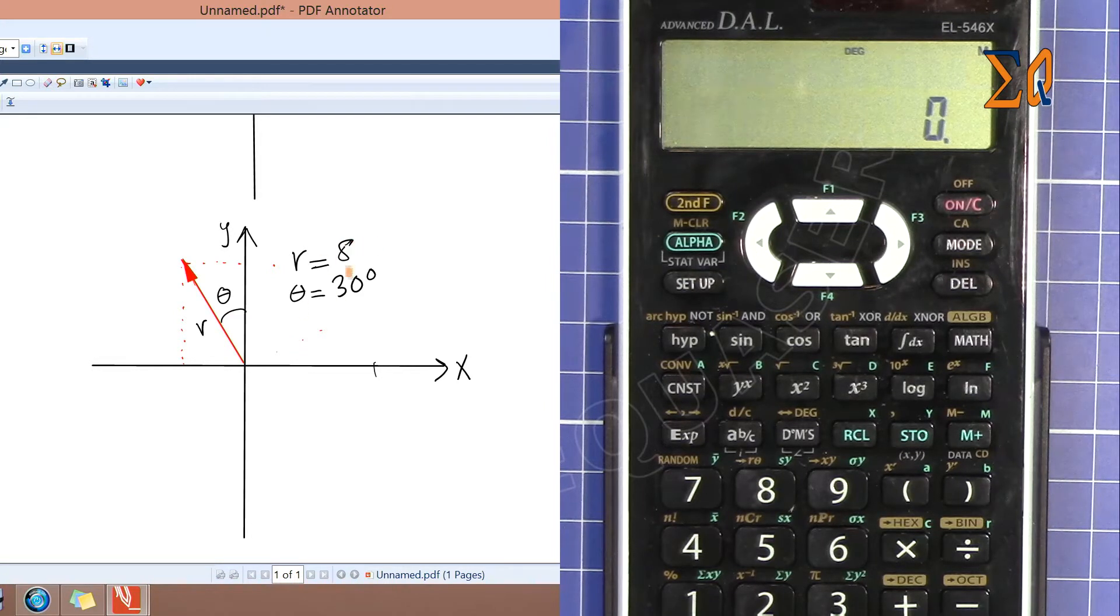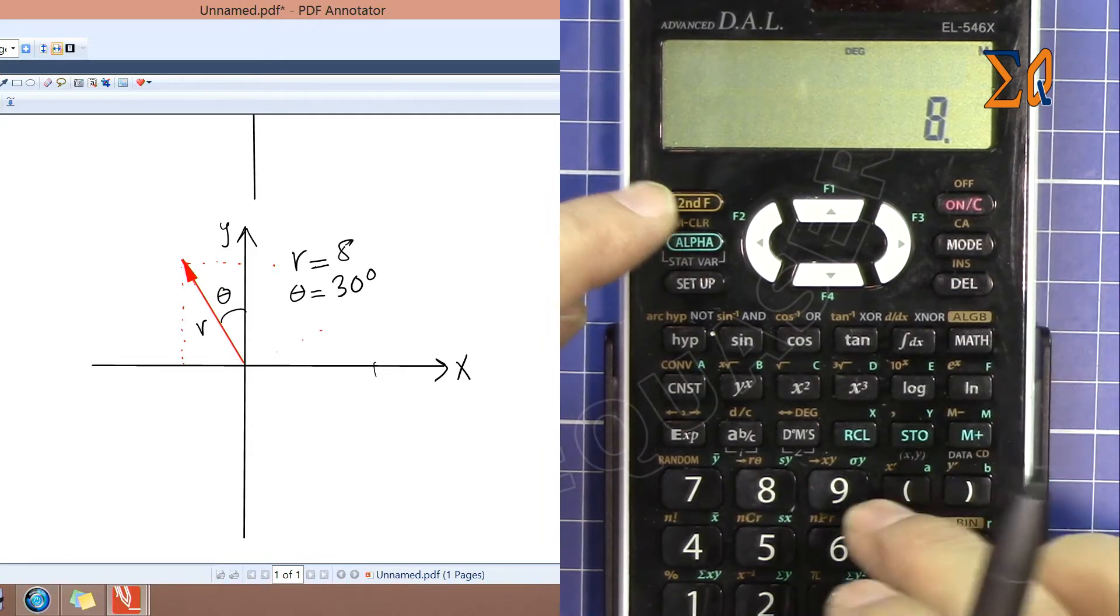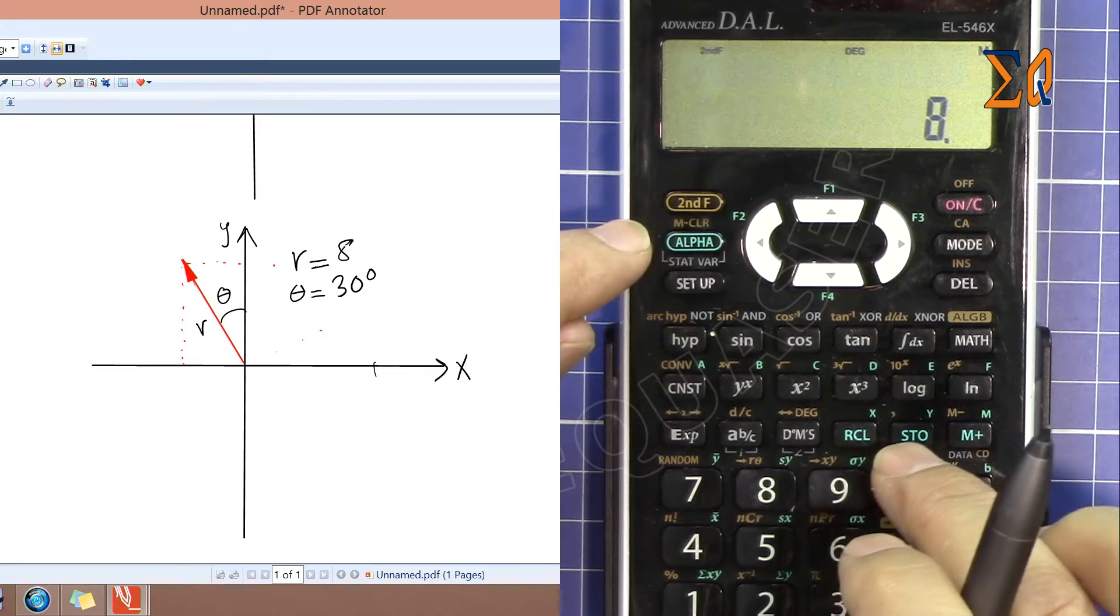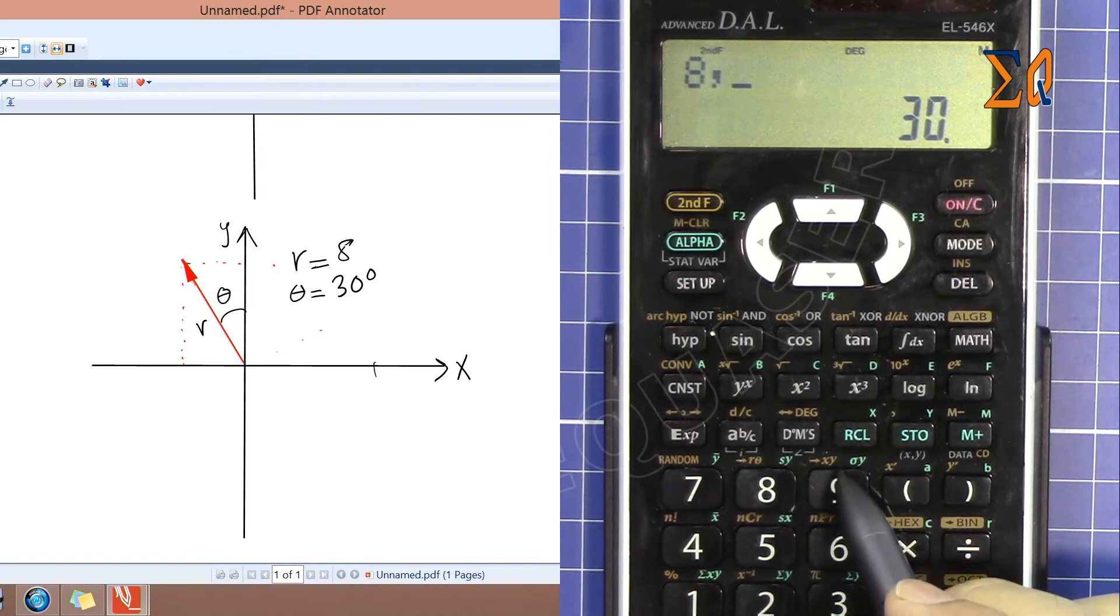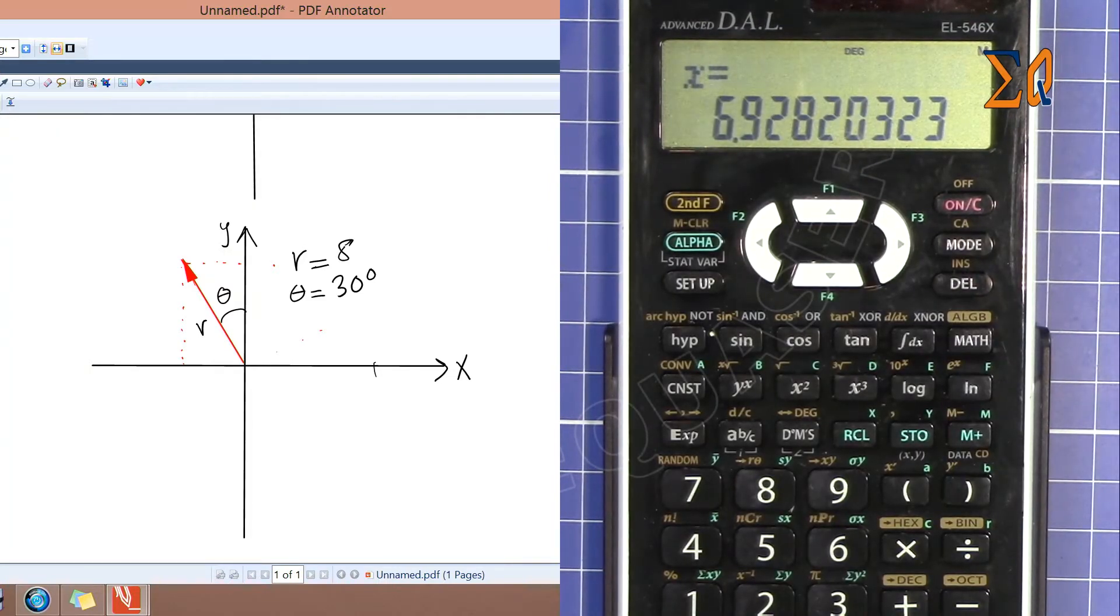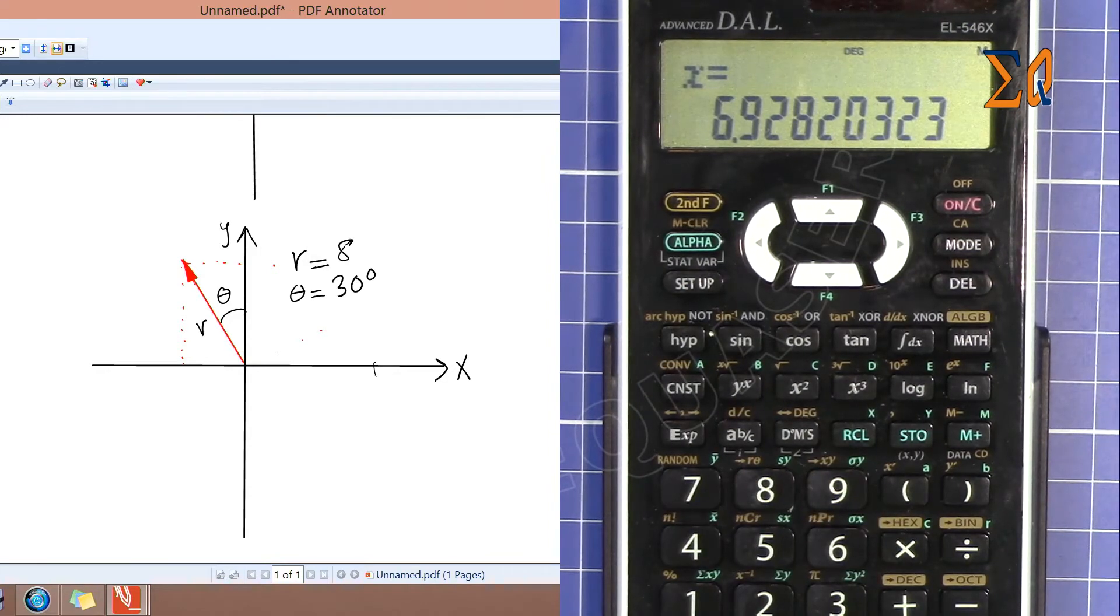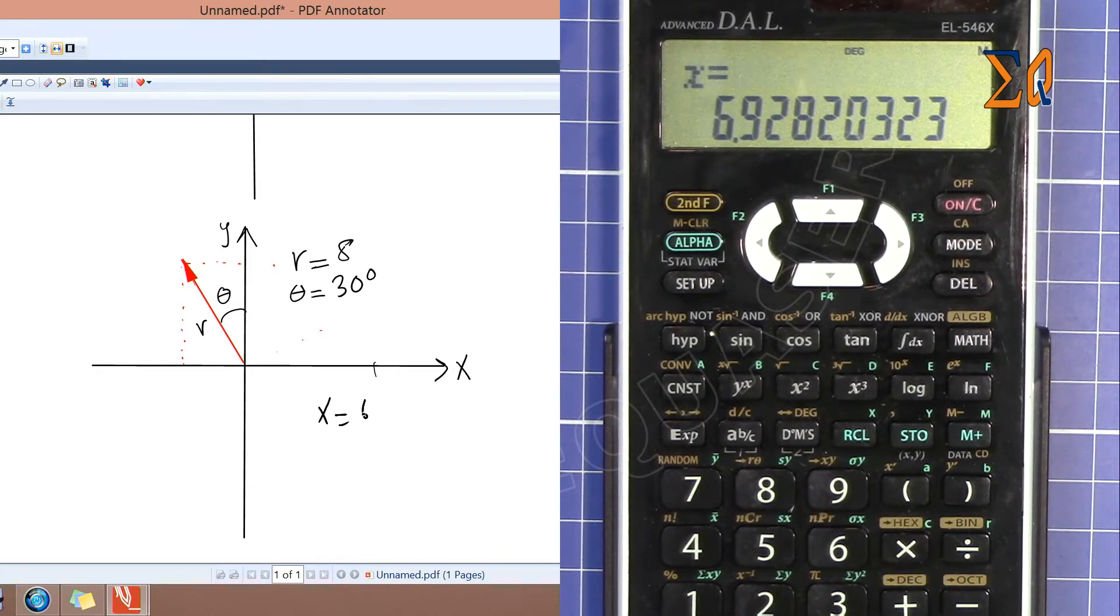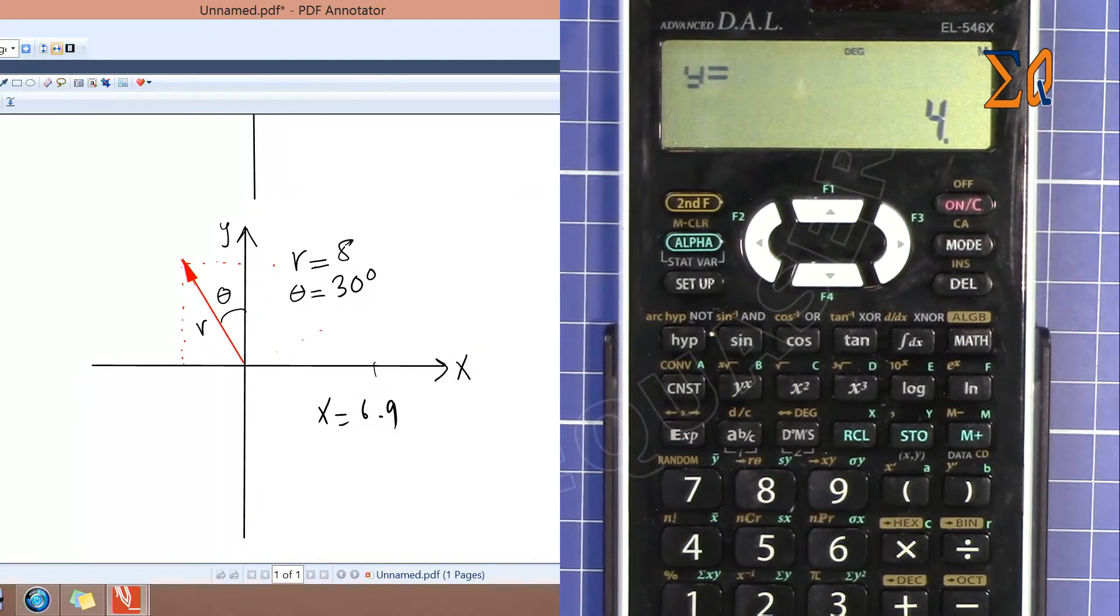Now let's have a look at this example. The difference is that we have R is 8 and angle is 30 in the second quadrant. Press 8, then second function comma, and 30. Do not press enter here. Now second function and then 9, X is here—it shows as 6.9.